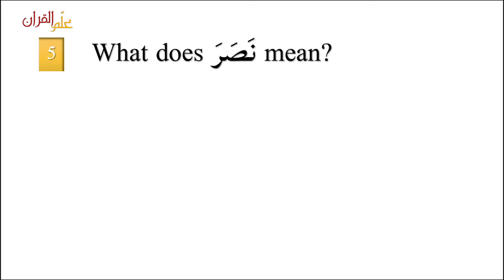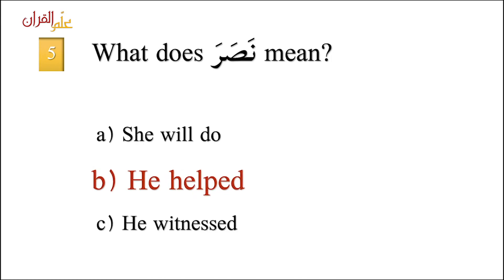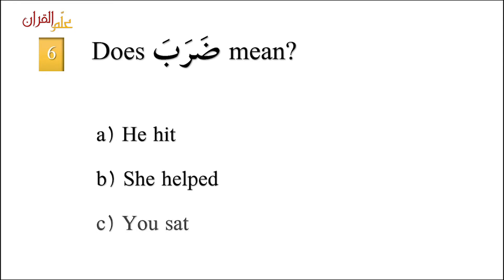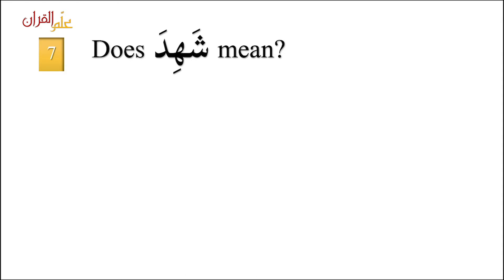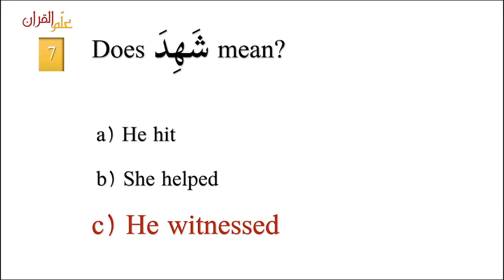Question five: What does nasara mean? A. She will do, B. He helped, C. He witnessed. The correct answer is B — he helped. Question six: Does dharaba mean? A. He hit, B. She helped, C. You sat. The correct answer is A — he hit. Question seven: Does shahida mean? A. He hit, B. She helped, C. He witnessed. The correct answer is C — he witnessed.